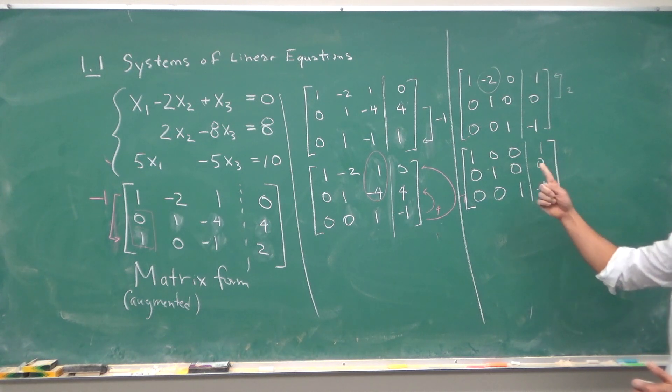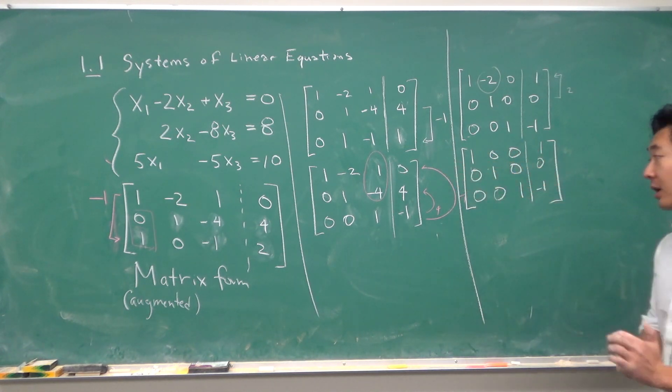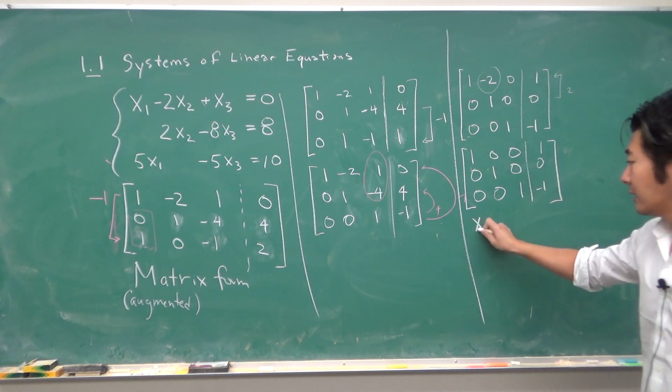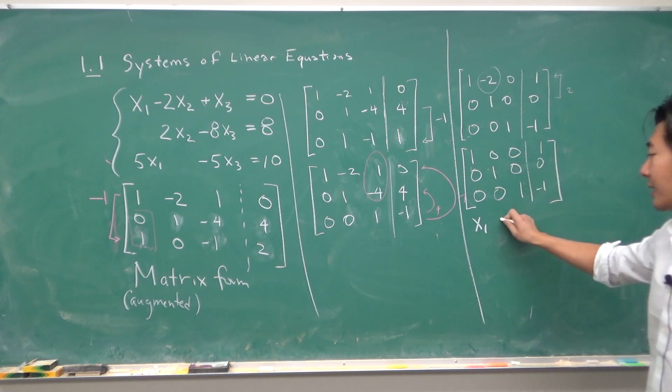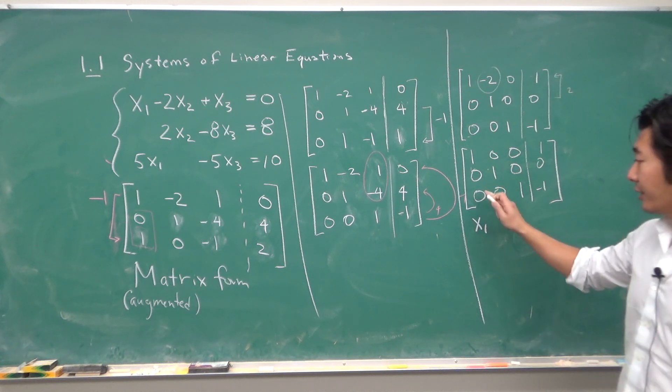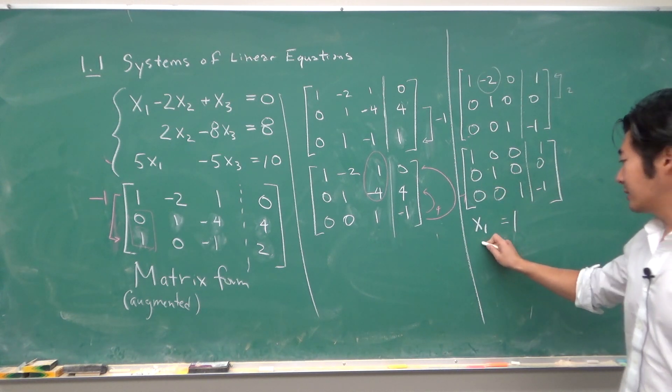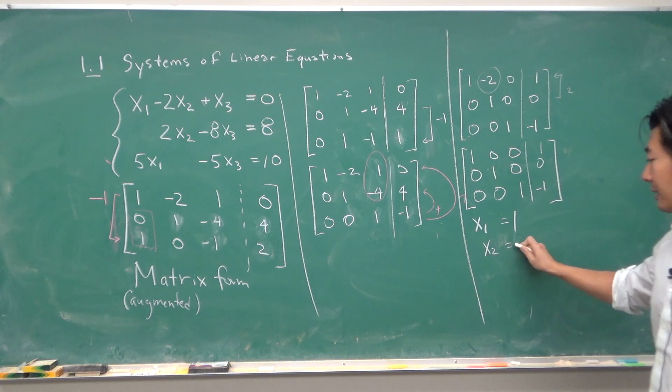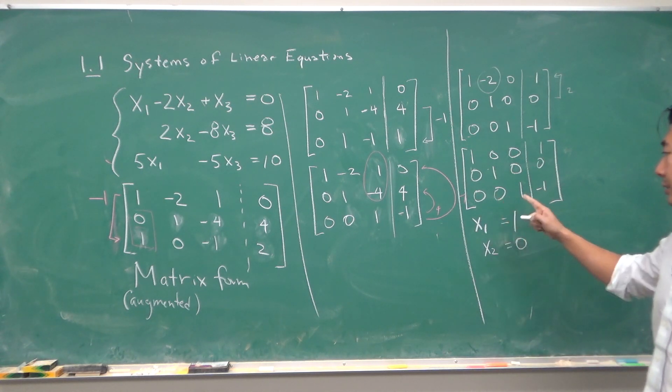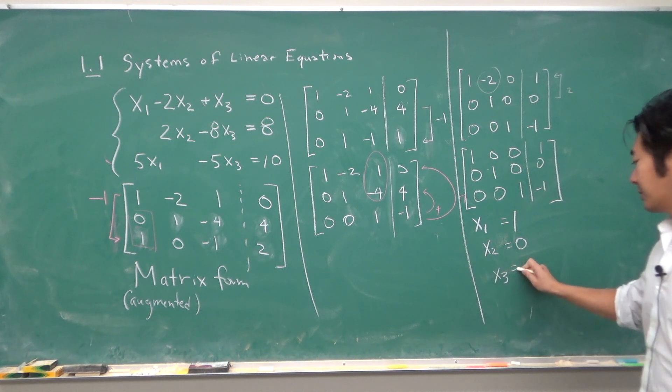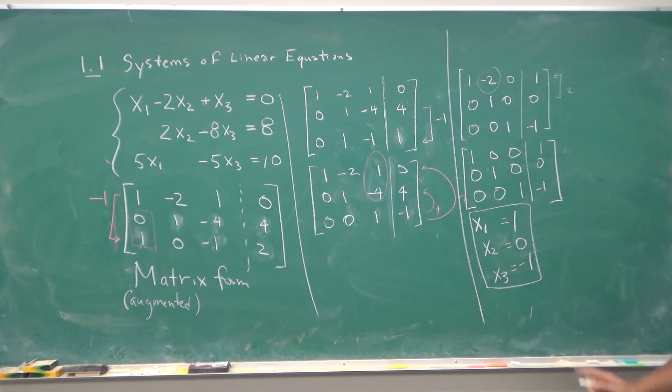Now if you rewrite this matrix into the equation form, what do you get? You get x1 plus 0 x2 plus 0 x3 equals 1. 0 x1 plus 1 x2 plus 0 x3 equals 0. And 0 x1 plus 0 x2 plus 1 x3 is equal to negative 1. So we get our solution set.